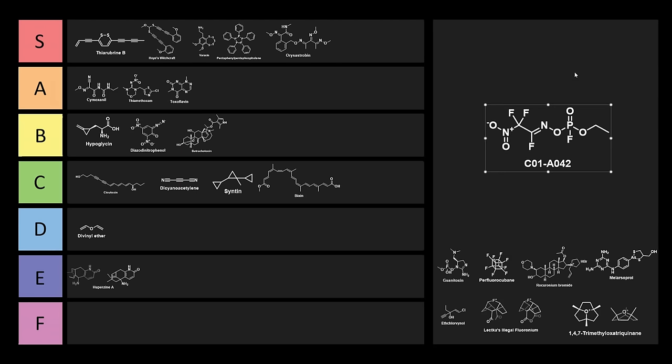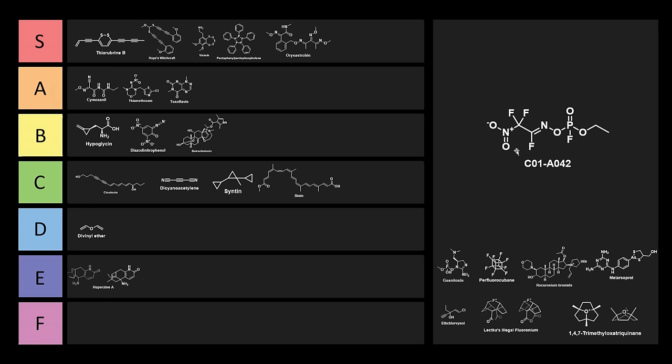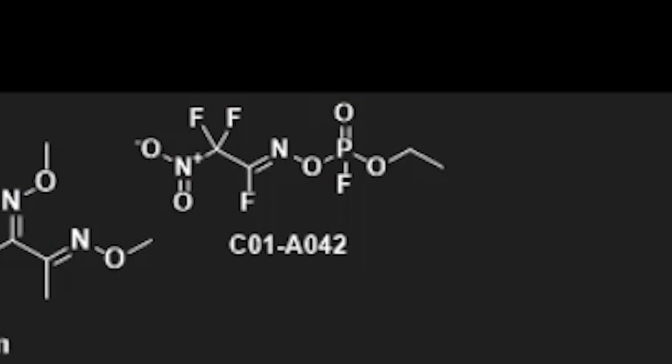Next, we have this nerve agent that we actually covered in the nerve agent tier list. This one looks like one of the most cursed chemicals ever. The only protons it has are on this ethyl group over here. And it's got a nitro group. It's got a CF2. It's got a fluoroimine, which is actually an oxime, and it's a phosphoryl oxime with a PF. This thing is super duper cursed. This is extremely cursed. Right into S-tier with you. CO1A042.